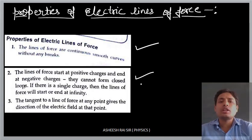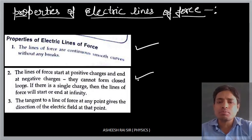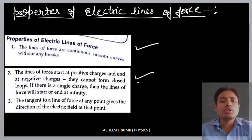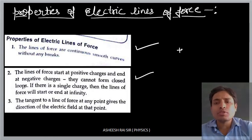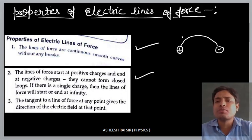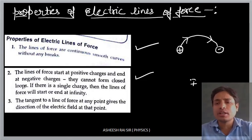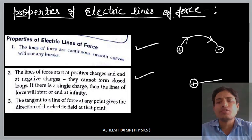Second property: the line of force starts from the positive charge and ends at the negative charge. They cannot form a closed loop. If there is a single charge, then the line of force will start or end at infinity. If there is a pair of charges — one positive and one negative — the electric field line starts from the positive and ends at the negative. With a single charge, it starts from it and ends at infinity.